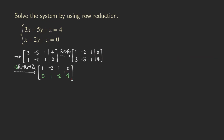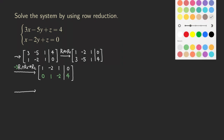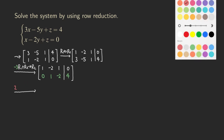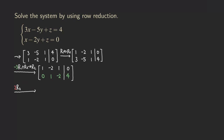Just one more step and we can turn it into reduced row echelon form. All we need to do is use this 1 and remove this negative 2 — turn it into a 0. So another row operation: multiply row 2 by 2, add to row 1, and change row 1. So we get 0, 1, negative 2, and then 4 here.